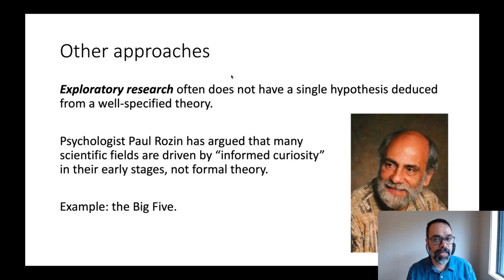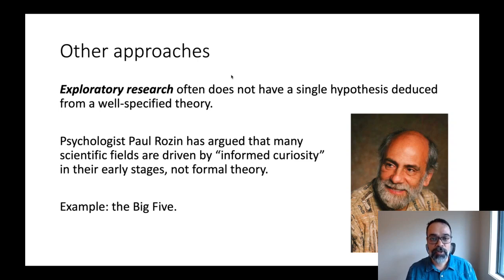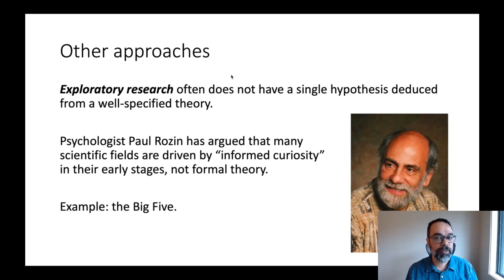Paul Rozin has called this informed curiosity, arguing that a lot of research should be driven by it. One example in psychology is the development of the Big Five model used in personality psychology, where researchers asked: what are the important dimensions of personality? Rather than starting with a personality theory, they looked at natural language — the words regular people use to describe one another — and looked for patterns in how people talk about each other. That's where the Big Five comes from.